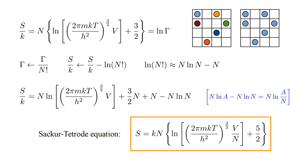s equals k n times the sum of two terms. The second term, five-halves, replaces the three-halves of our original expression. The first term is the original log term with v replaced by v over n. If our logic is correct, this additional one over n factor should rectify the Gibbs paradox.